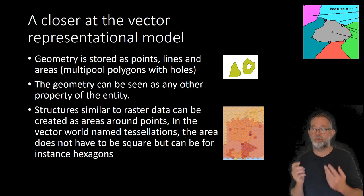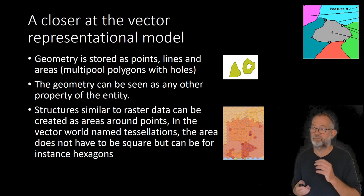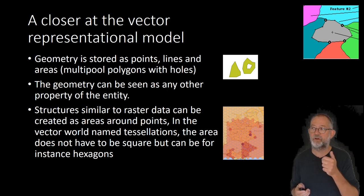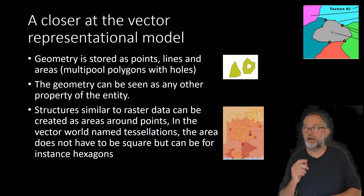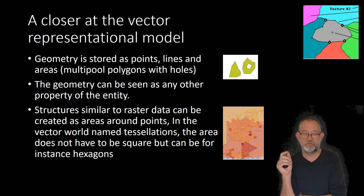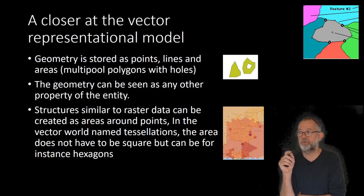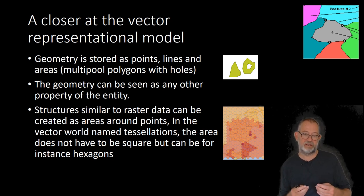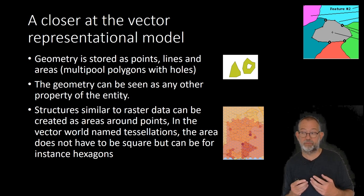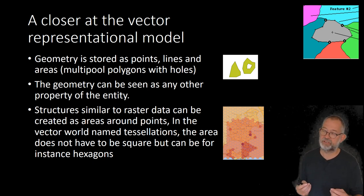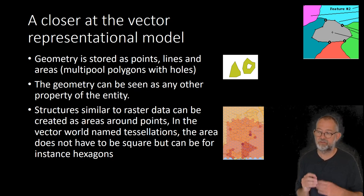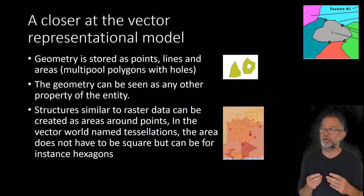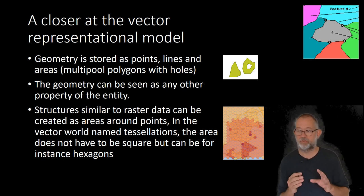Looking at vector data: geometries are stored as points, lines, and areas — technically 'polygons' is the commonly used but not strictly correct term, since we can have multiple areas of the same object. For example, some Danish municipalities have many islands, or a lake could have an island in it creating a hole in the polygon. Strictly speaking, from a mathematical point of view, that's not a polygon.